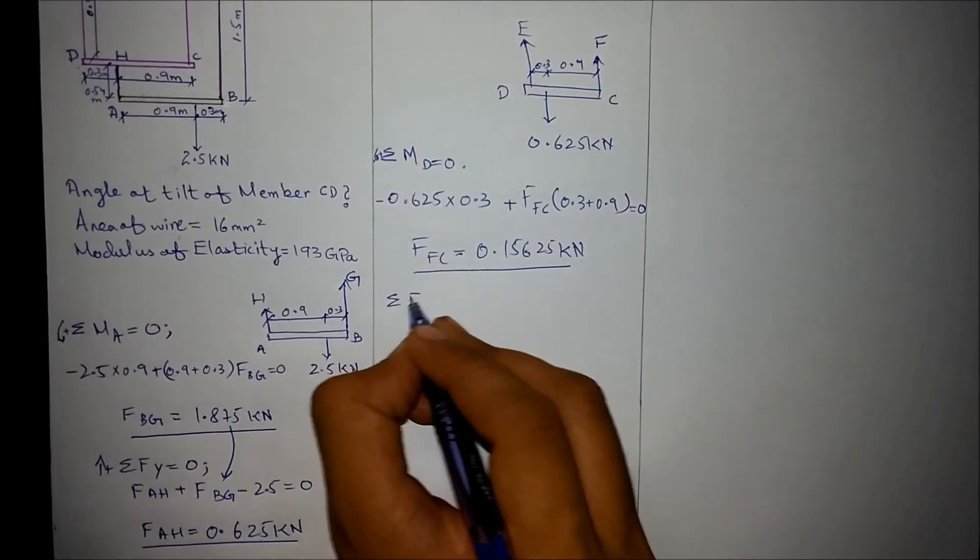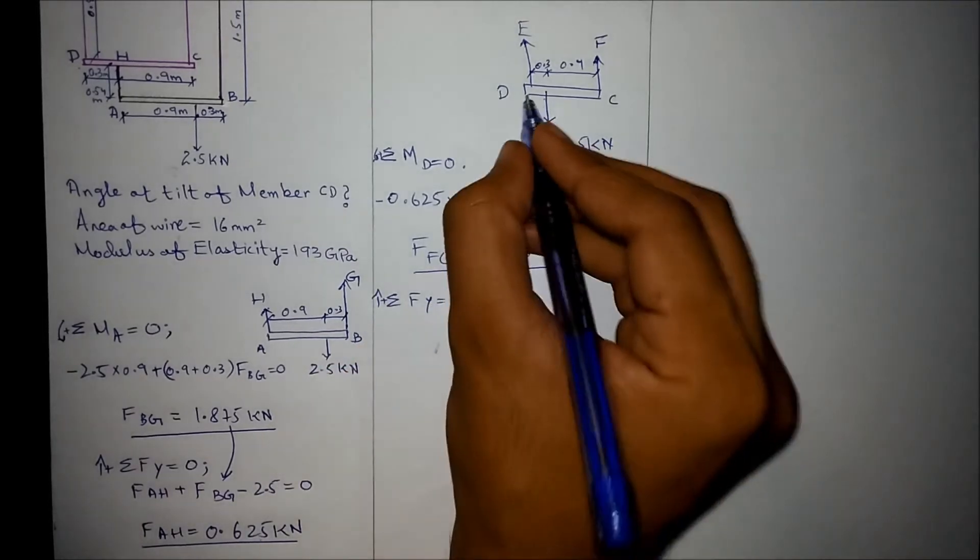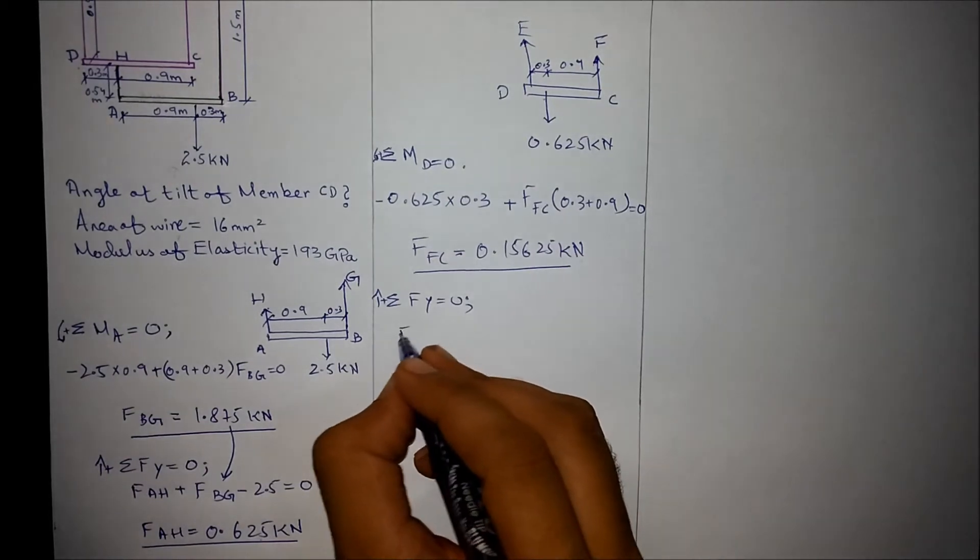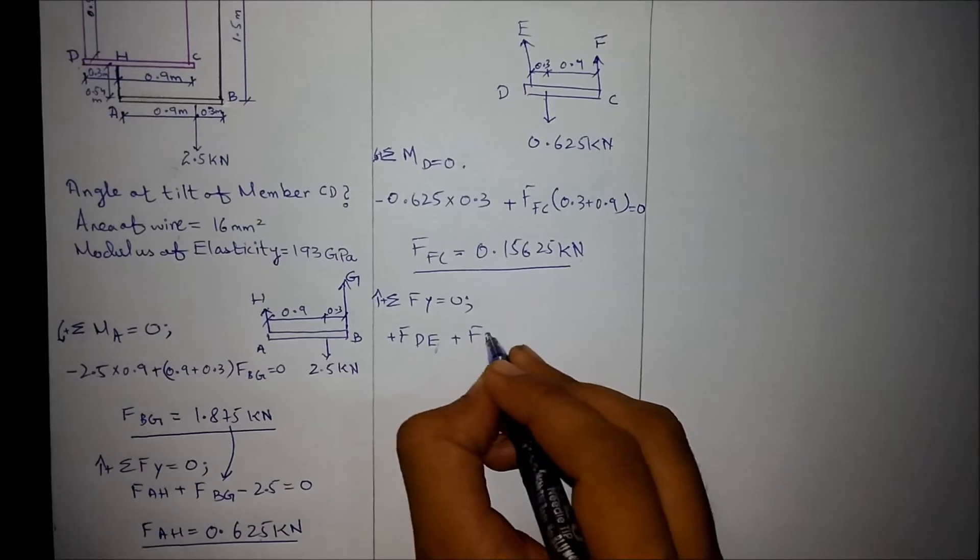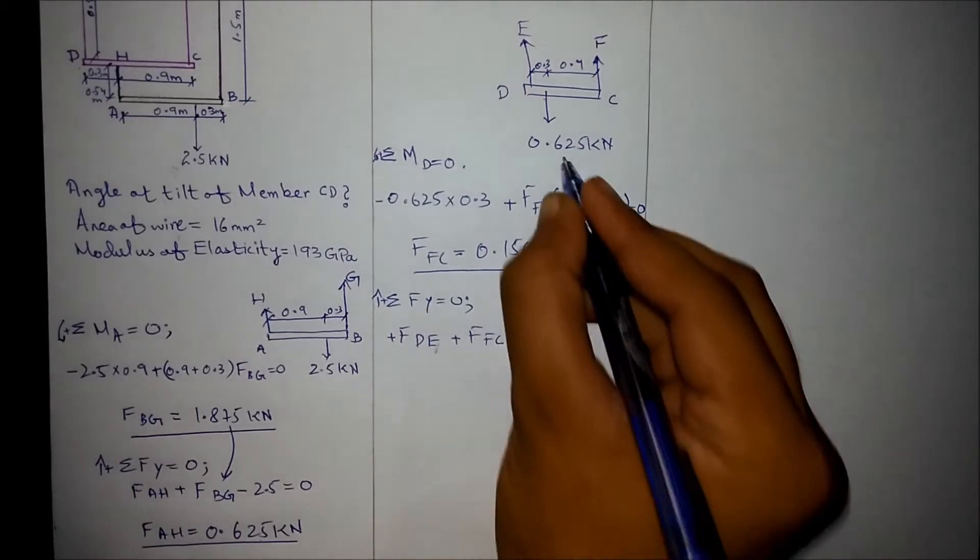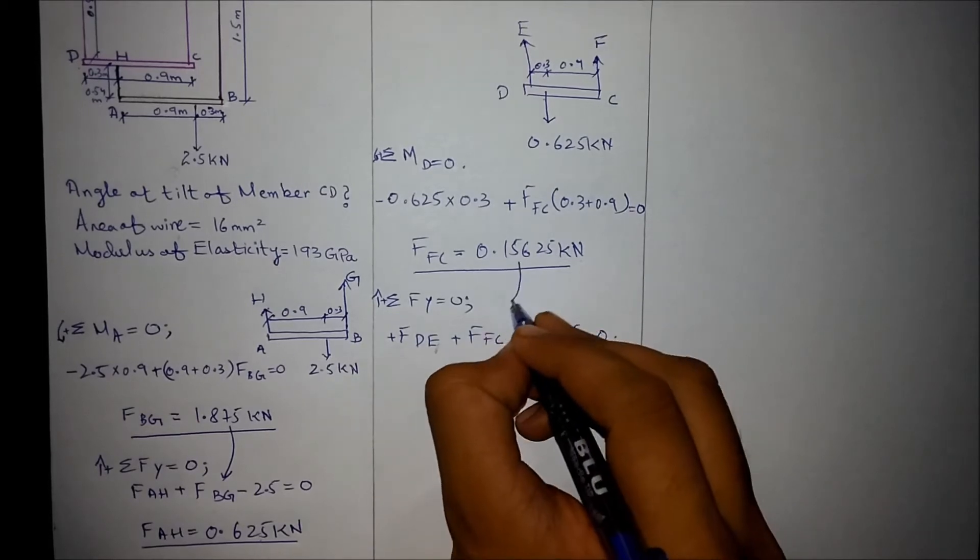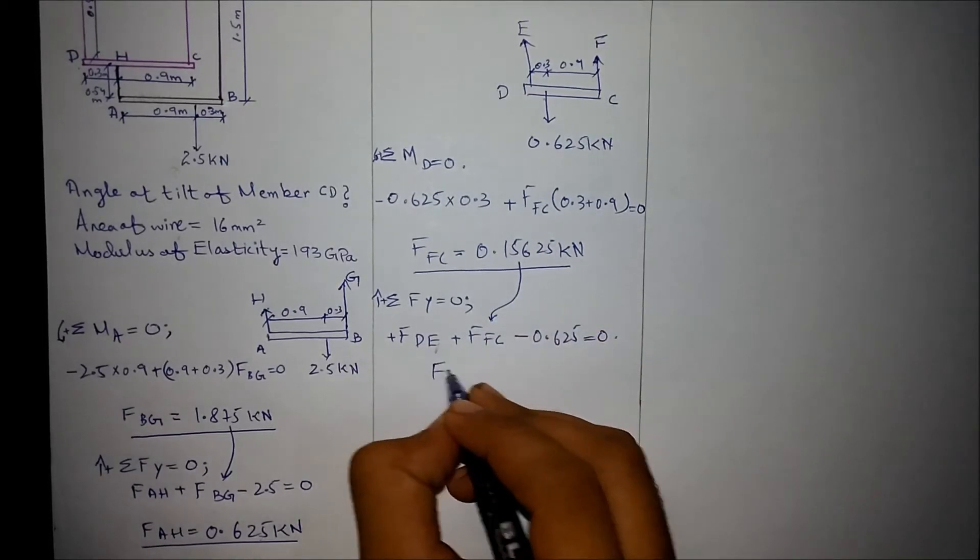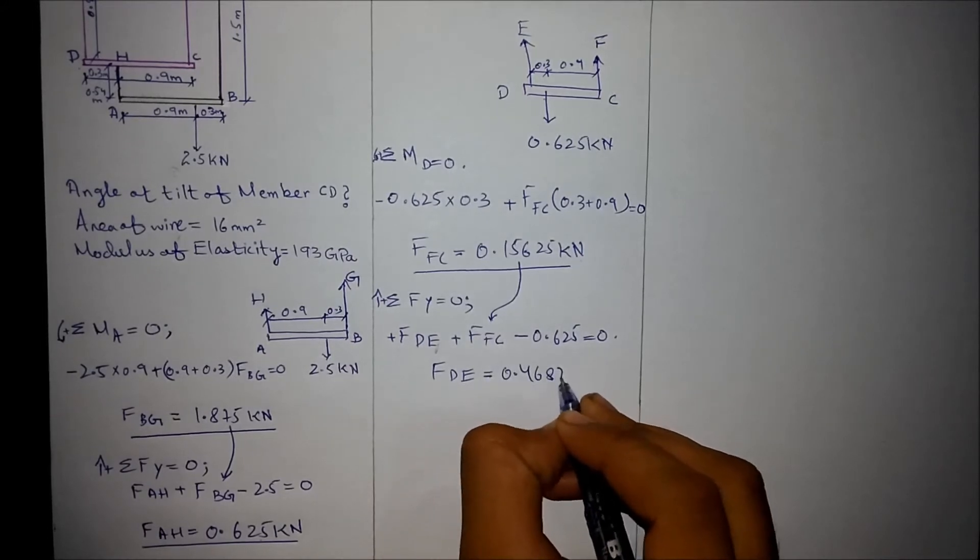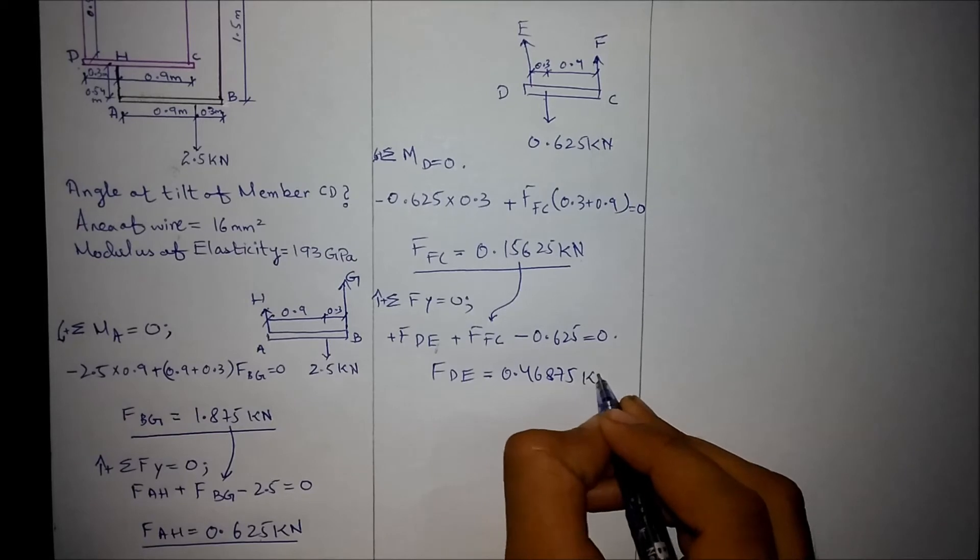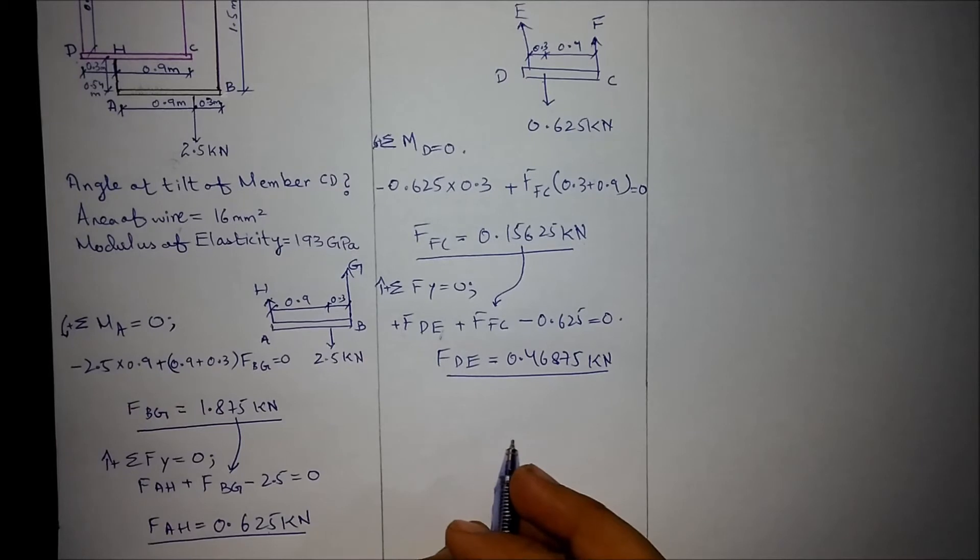Applying the summation of forces in y direction. The force in this wire is FDE. FDE plus FFC minus 0.625 is equal to zero. FFC is this value. FDE comes out to be 0.46875 kN. Now we know the forces in each wire.